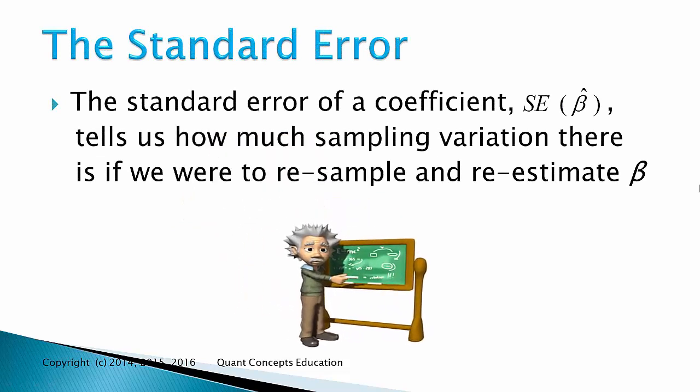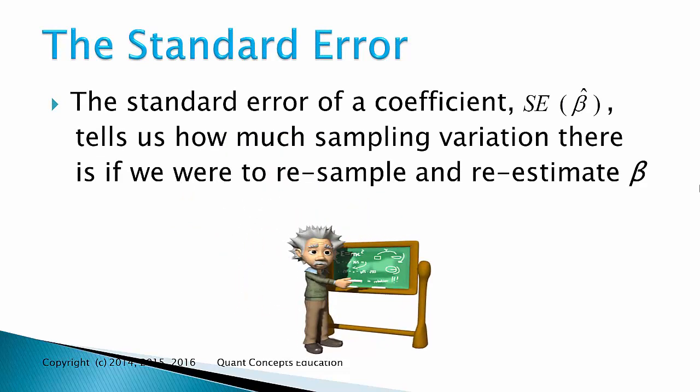The standard error of a coefficient tells us how much sampling variation there is if we were to resample and re-estimate beta. It's an indication of how reliable the sample estimates are in our sample regression output.